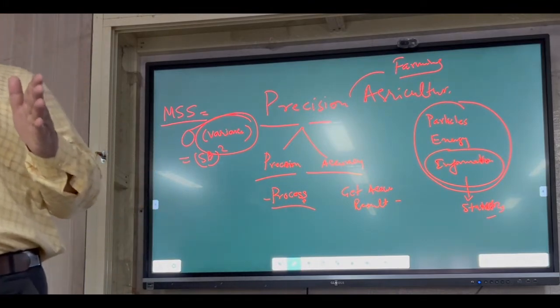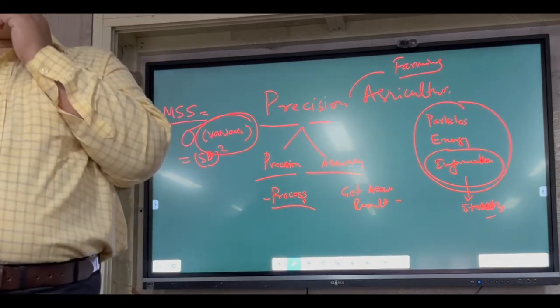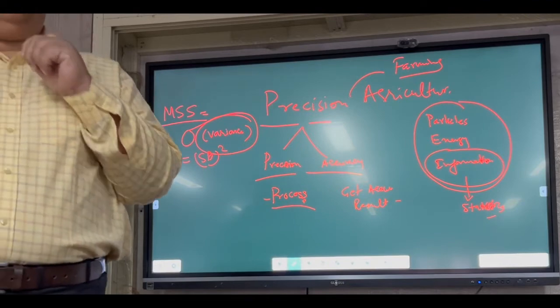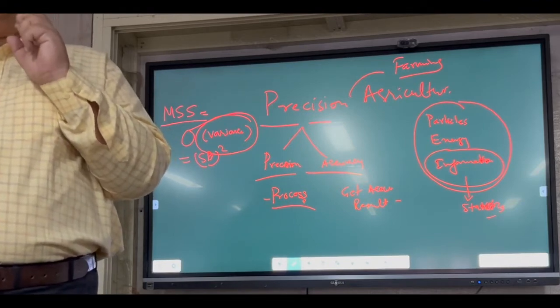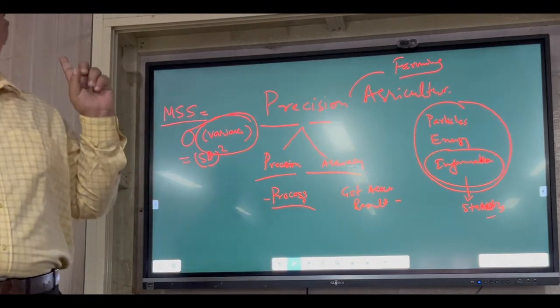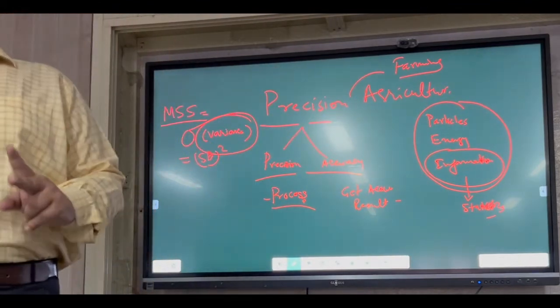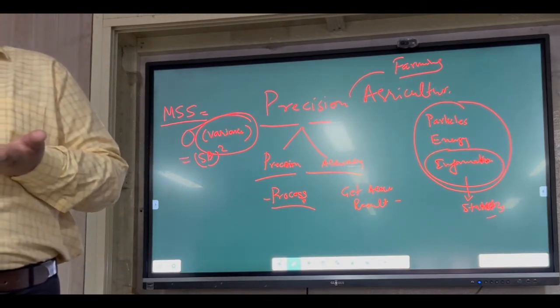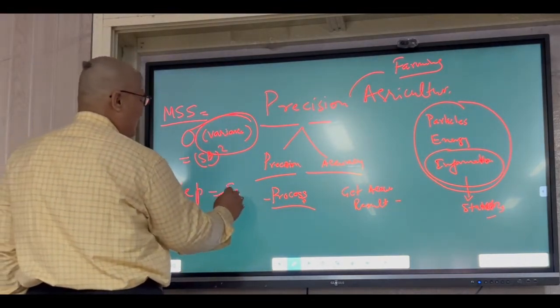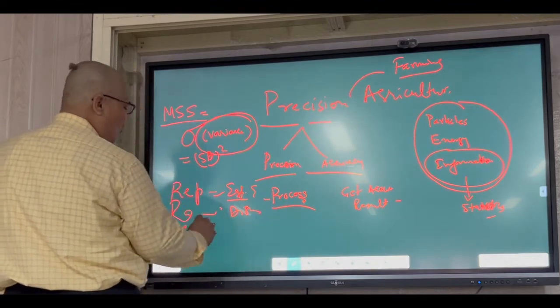You're talking about replication, randomization, and local control. First understand the objective of replication. Replication's objective is to estimate error. Randomization's objective is distribute error. And local control's objective is minimize error.